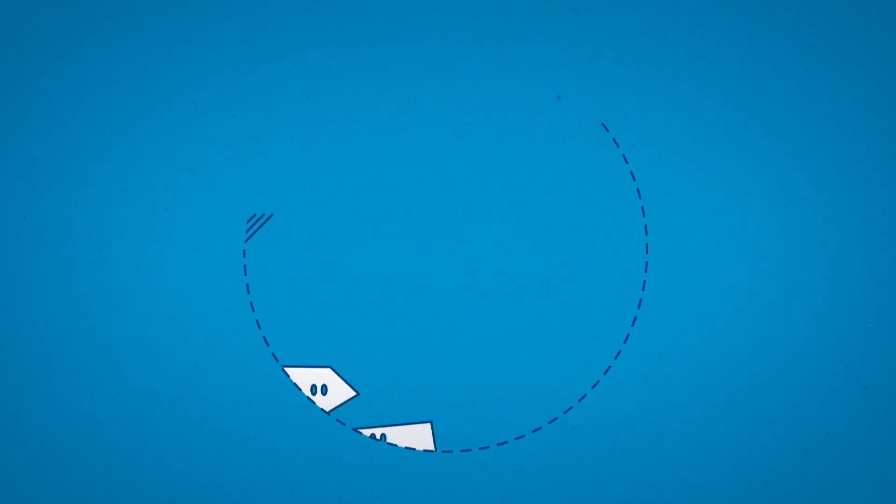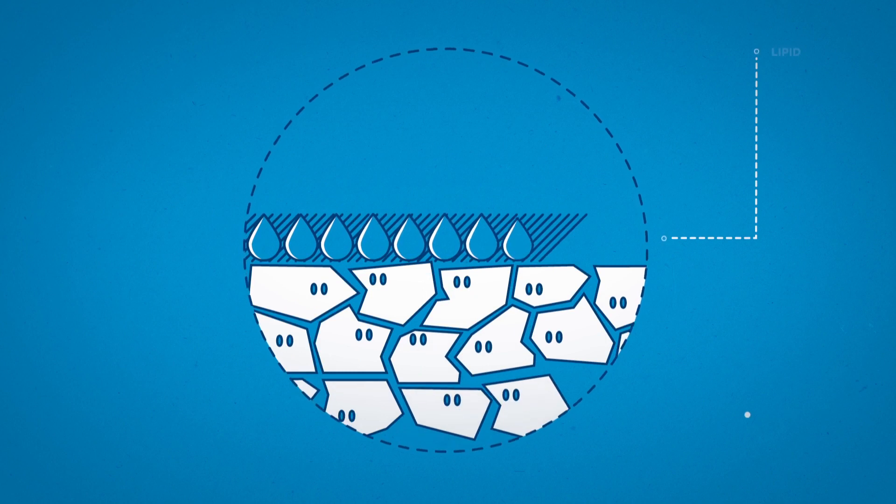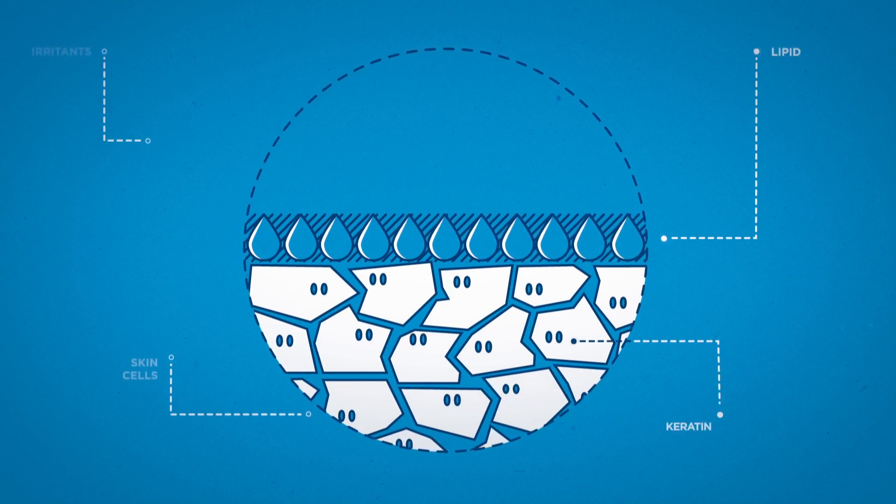The cells are held together by a layer of oils known as lipid. In healthy skin, the cells and lipid press tightly together to form a natural barrier which locks in water to prevent dehydration and protects the underlying skin from irritants.